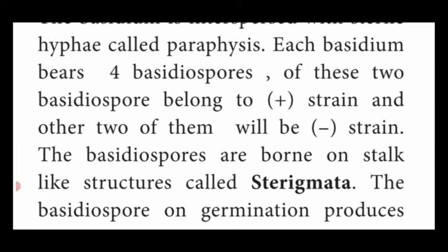These basidiospores germinate and produce haploid primary mycelium. The life cycle of Agaricus shows a very short diploid phase — that is the secondary mycelium phase — and also a short haploid phase, but a prolonged dikaryotic phase.